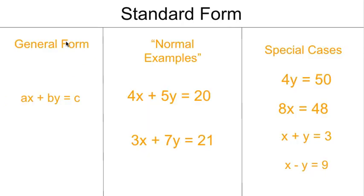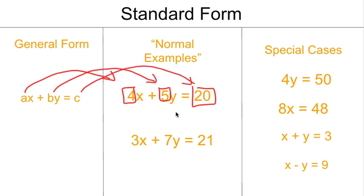Our final form of equation is called standard form. The general form of standard form looks like ax plus by equals c. So we can have some of our quote-unquote normal examples where we're just replacing a, b, and c with numbers. So just as before, everything that's not x and y that's listed as a variable in the general form is going to be replaced with a number. And we can see those numbers, they can be positive, they can be negative, whatever it happens to be.